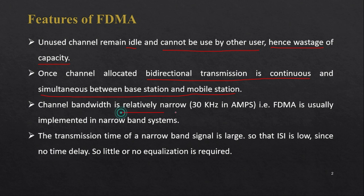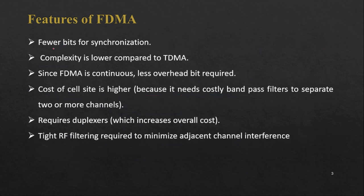In FDMA, channel bandwidth is relatively narrow — for example, the Advanced Mobile Phone System uses only 30 kilohertz per channel. Due to this narrow bandwidth, the transmission time of the narrowband signal is large, providing enough time separation between frames. This reduces inter-symbol interference, so no equalizer or equalization circuit is required.